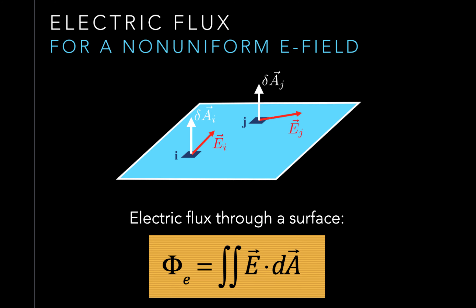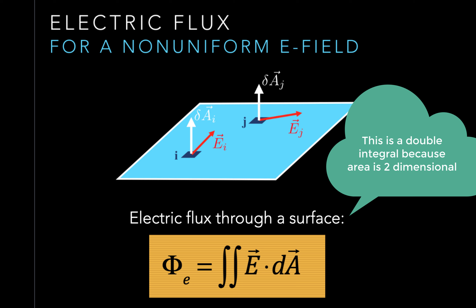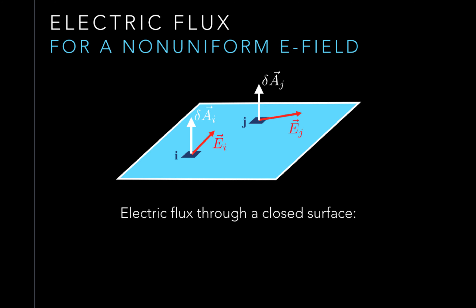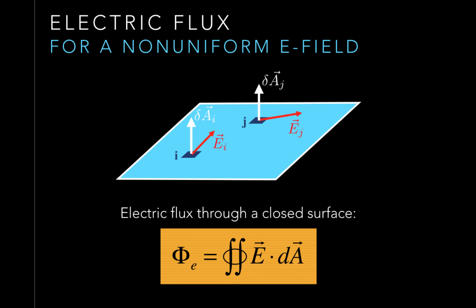That is a double integral. Why is it a double integral? Because you're integrating over a surface — you have to integrate in the x direction and the y direction. So it's a surface area integral. For a closed surface, this equals the flux. The electric field integral over the surface — obviously a single patch isn't a closed surface; it needs to be one part of the closed surface. But for the flux, you do this double integral, called a surface integral.